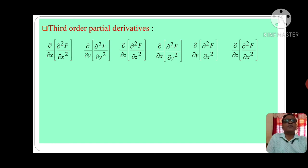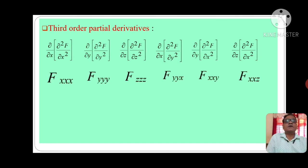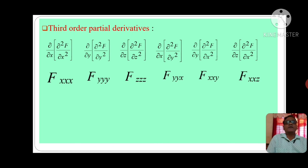Now friends, these are third order partial derivatives. Del by del x of del²f by del x², meaning we are partially differentiating del²f by del x² with respect to x — we get f_xxx. Del by del y of del²f by del y² is denoted by f_yyy. Del by del z of del²f by del z² is denoted by f_zzz. Del by del x of del²f by del y² is denoted by f_yyx. Del by del y of del²f by del x² is denoted by f_xxy. Del by del z of del²f by del x² is denoted by f_xxz.